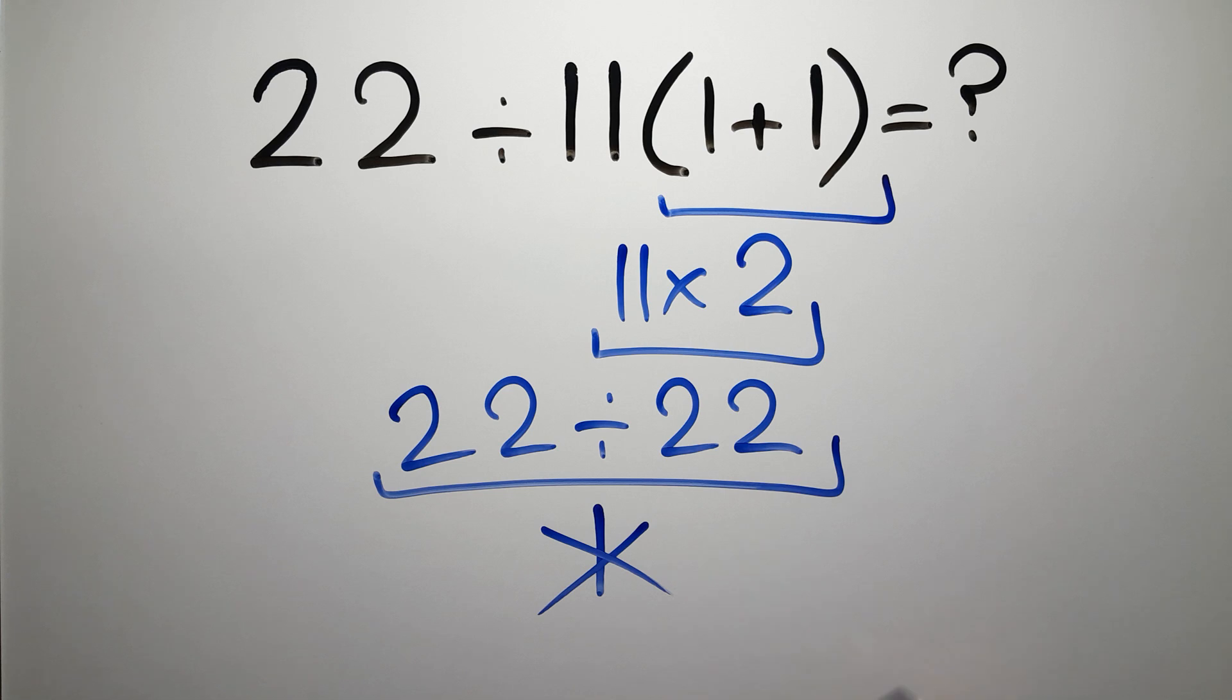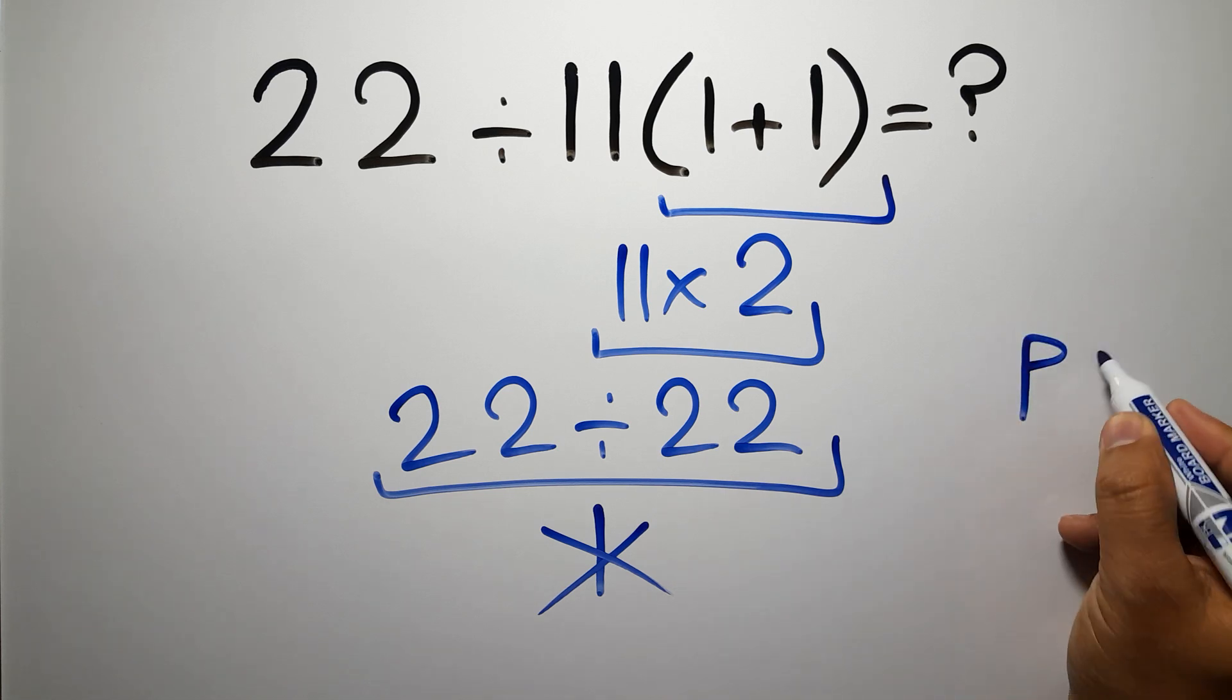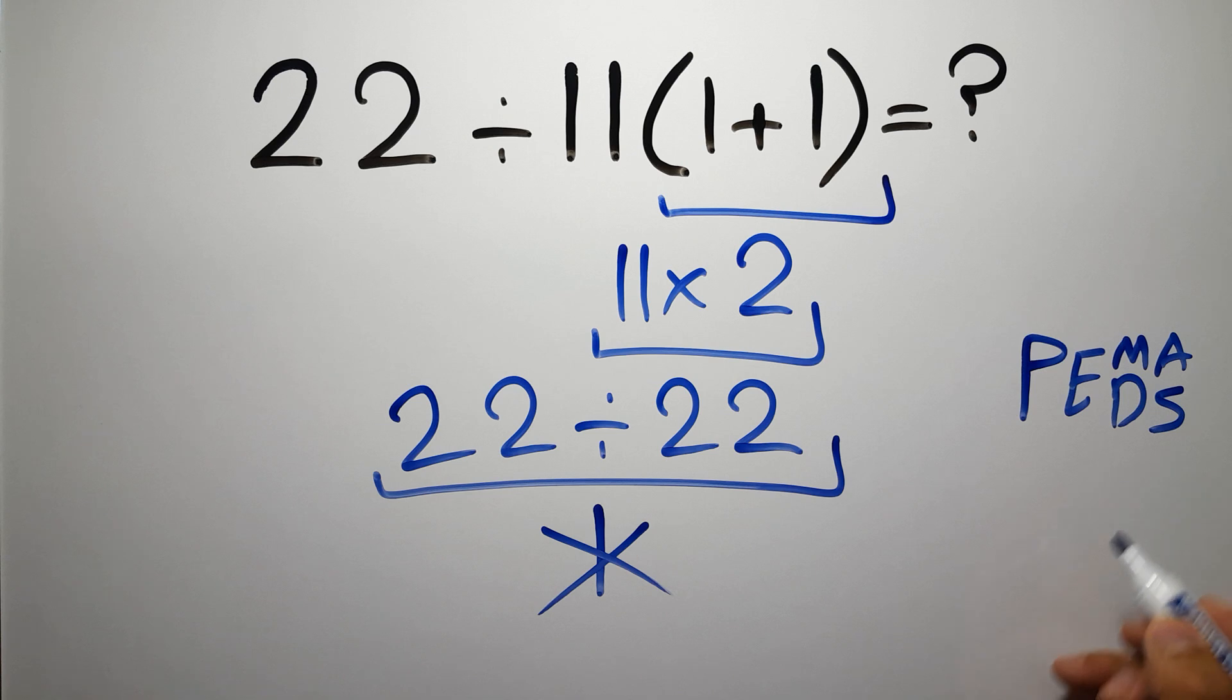Because according to the order of operations, first we have to do parentheses, then exponents, then multiplication or division, and finally addition or subtraction. Remember that multiplication and division have equal priority, and we have to work from left to right, and the same applies to addition and subtraction.